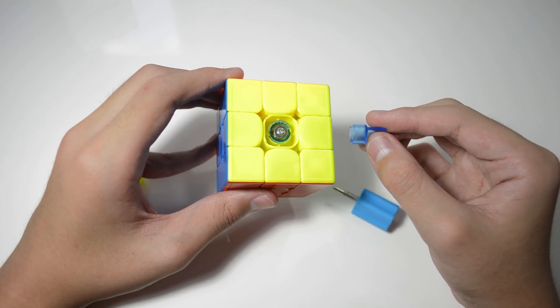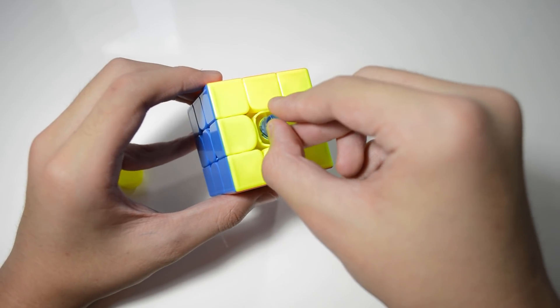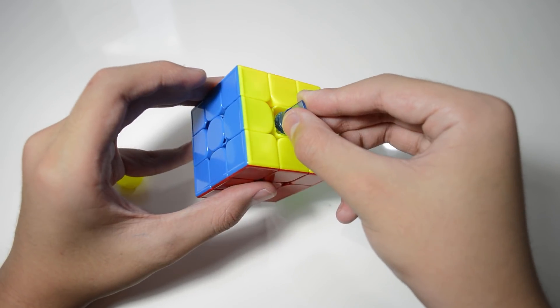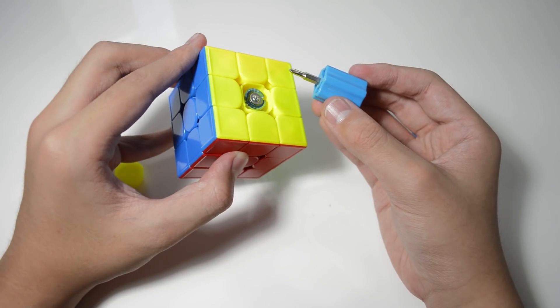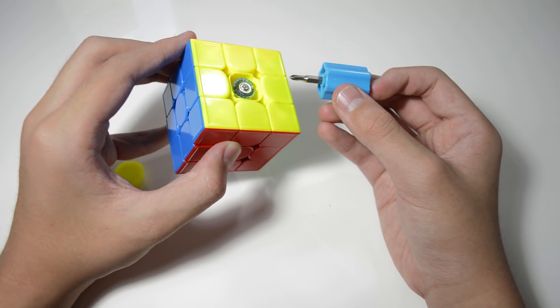The cube uses this tool with its sawtooth mechanism to adjust the springs by rotating it in an anti-clockwise motion. Now that was just for the springs. For the actual tensions of the cube, you can use this screwdriver tool.